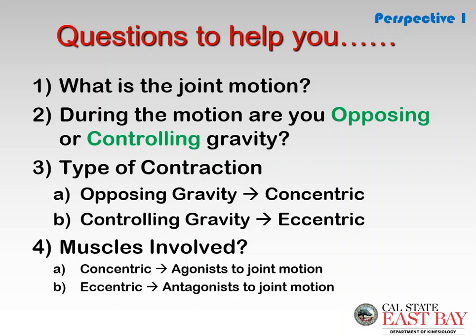During the motion, you decide: are you opposing or controlling gravity? Are you lifting a weight, or are you setting it down in a controlled manner? Based on that, you determine the type of contraction. If you decide you're opposing gravity, it is always a concentric contraction. If you are controlling gravity in the movement, it is always an eccentric contraction.